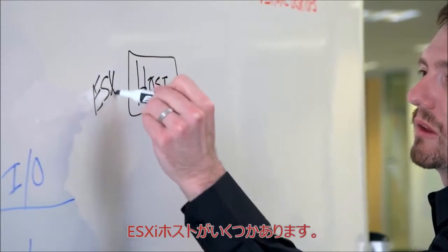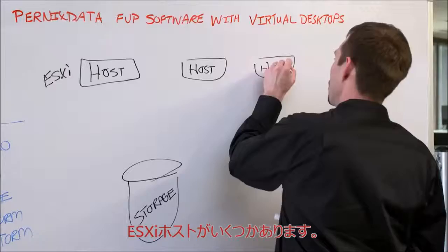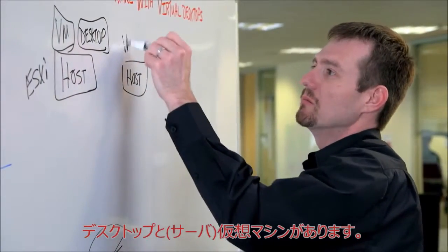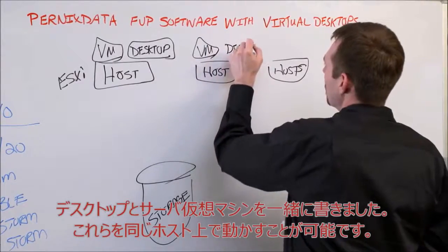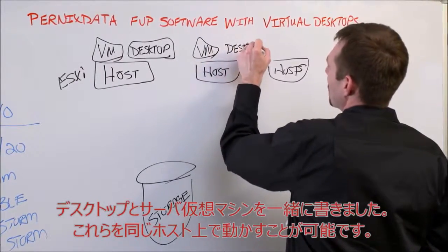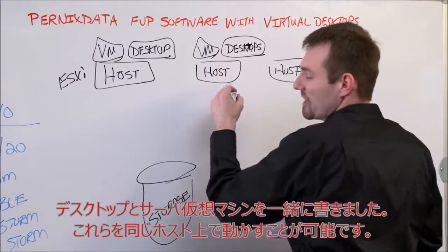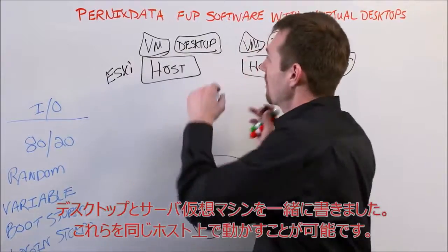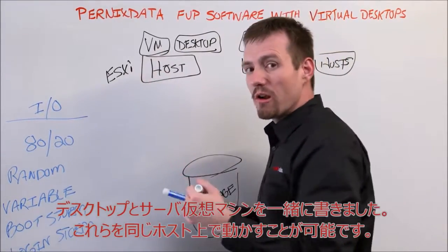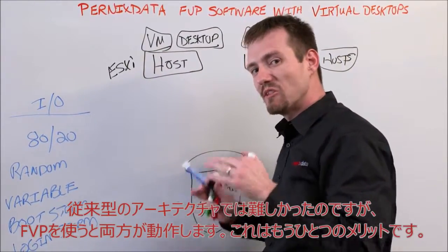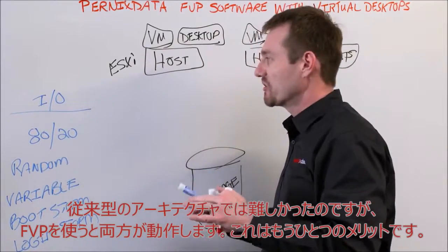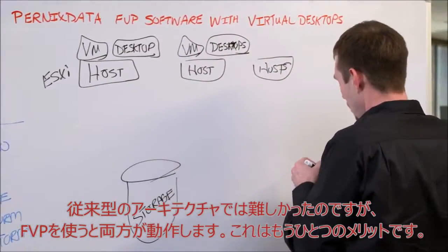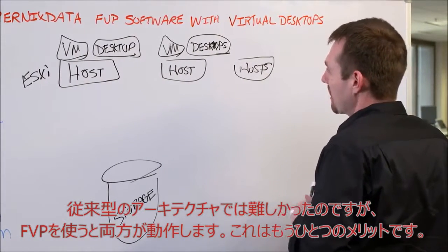Let's draw in the rest of our infrastructure, starting with some ESXi hosts. We have our desktops and our VMs. I specifically drew desktops and VMs here because not only are we going to run our desktops on our hosts, but we're actually going to run our VDI infrastructure as well. With Pernix Data FVP we'll be able to do both — and that's another added benefit of using FVP.